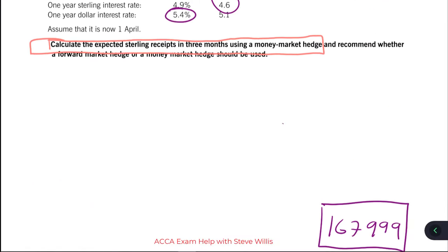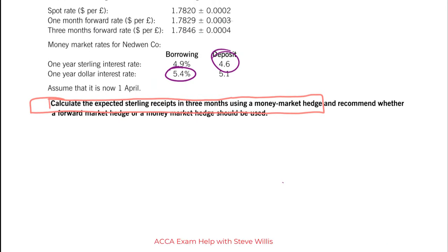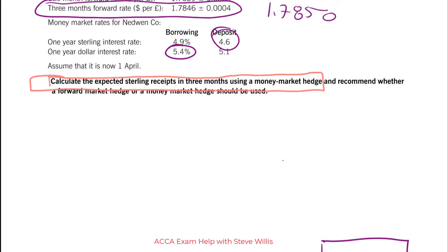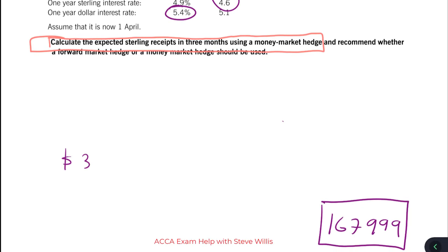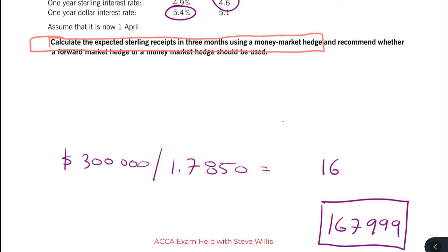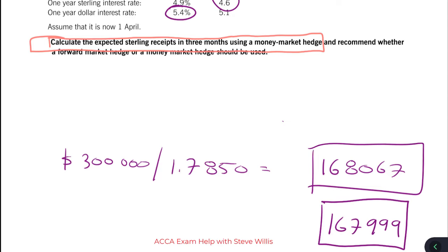Let's compare that to what we'd receive if we used the three-month forward contract. Again, the bank would give us the higher of the two FX rates, which would be 1.7850. All we have to do is divide the $300,000 by 1.7850, and we get £168,067. Because it's a receivable, we like the higher amount — therefore, we would go with the forward contract from the bank.